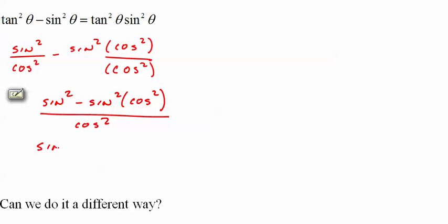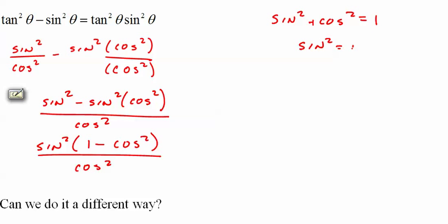I'm going to factor sine squared out of the top. I'll be left with one minus cosine squared over cosine squared. Since sine squared plus cosine squared equals one, one minus cosine squared equals sine squared. So we can rewrite this as sine squared times sine squared over cosine squared, which is the same as tangent squared.